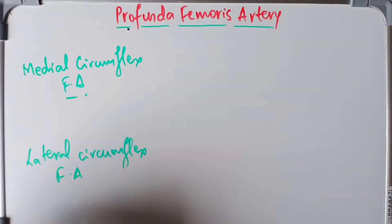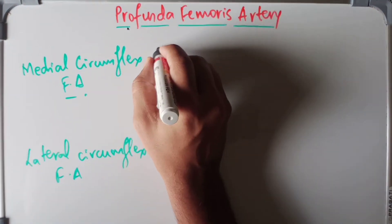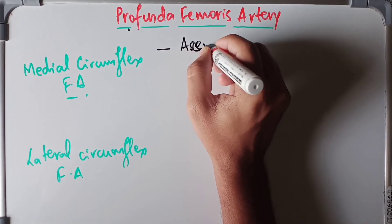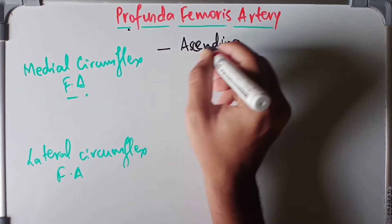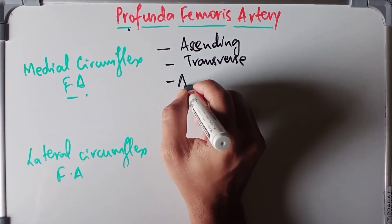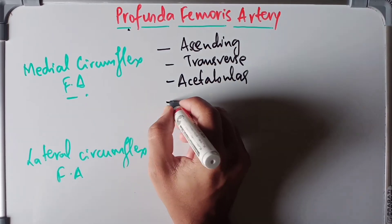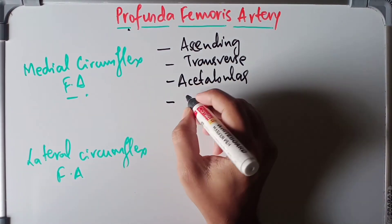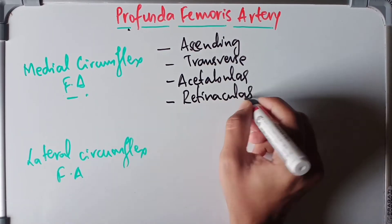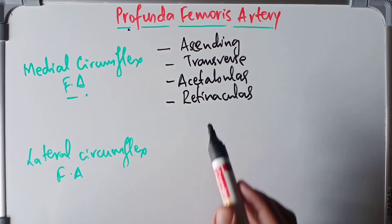The medial circumflex femoral artery gives four branches: the ascending branch, the transverse branch, the acetabular branch, and the posterior retinacular branch.